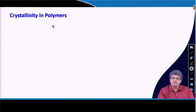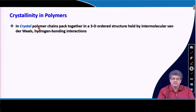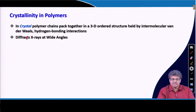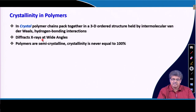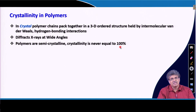Now I move to today's topic on crystallinity of polymers. In a crystal, polymer chains pack together in a 3D ordered structure held by intermolecular van der Waals forces like hydrogen bonding interactions. Crystals diffract X-rays at wide angles, and as discussed earlier, polymers are only semi-crystalline — 100% crystalline polymers are not possible because of the large molecular weight of the polymer.